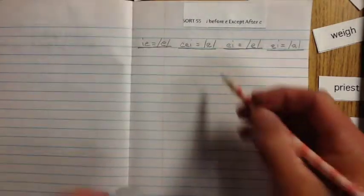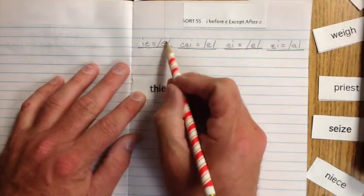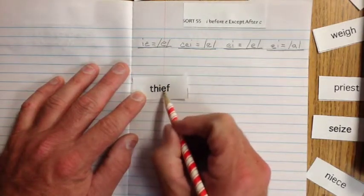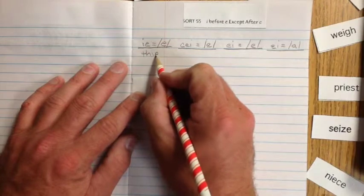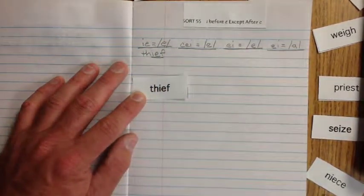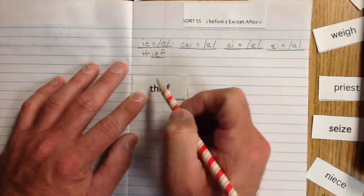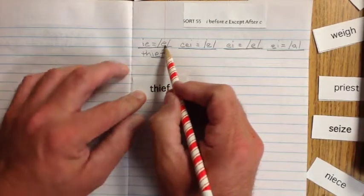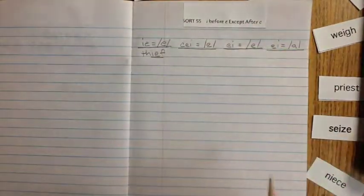So let's do the first I before E except after C. Let's do thief. E, E, thief. That would be a true I before E except after C. I before E. Beautiful. Thief. This IE is going to have the E sound, a long E. All right? So far so good? Good.